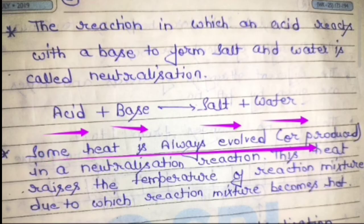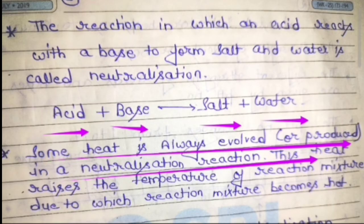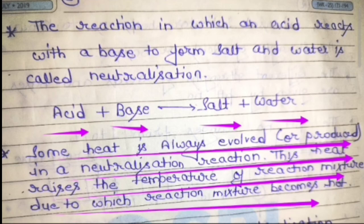Some heat is always evolved or produced in a neutralization reaction. This heat raises the temperature of the reaction mixture, due to which the reaction mixture becomes hot. Acid aur base — the hero and villain — when they react, an enormous amount of heat is released, which raises the temperature of the reaction mixture, making it hot.